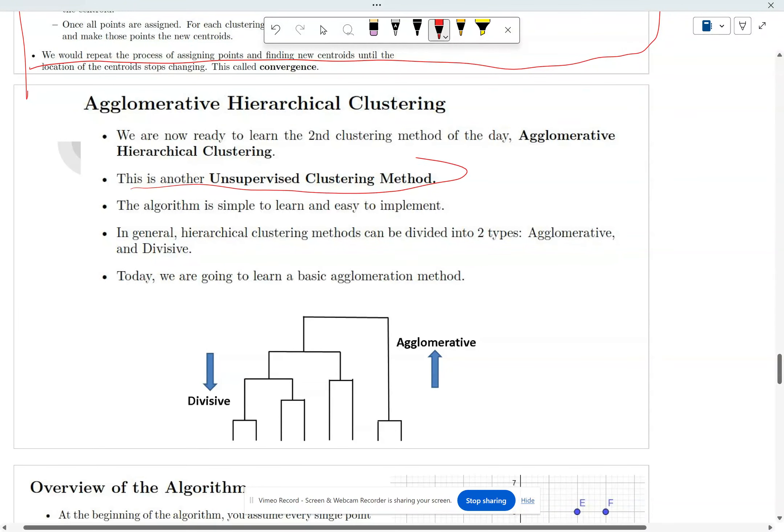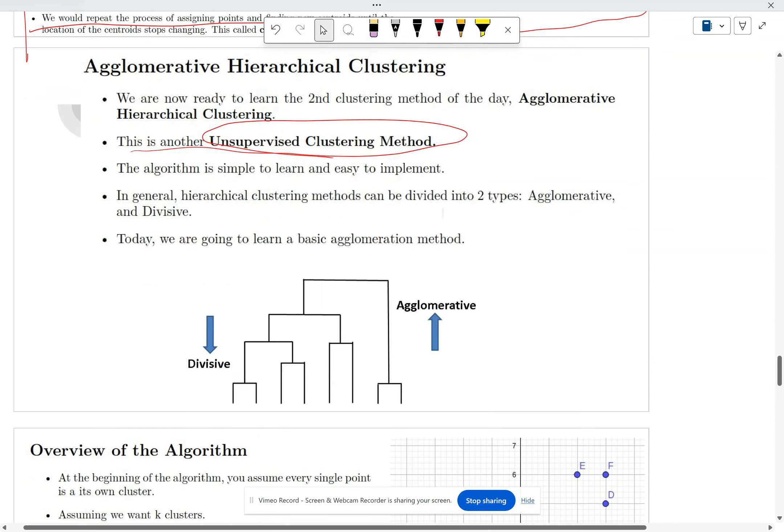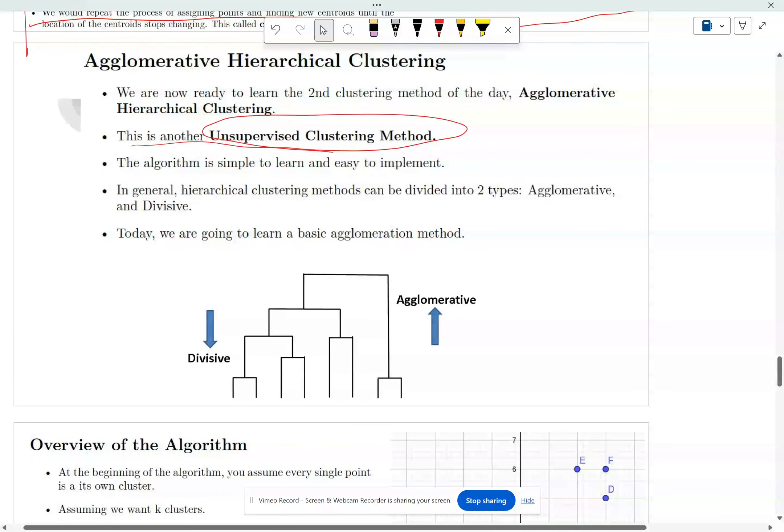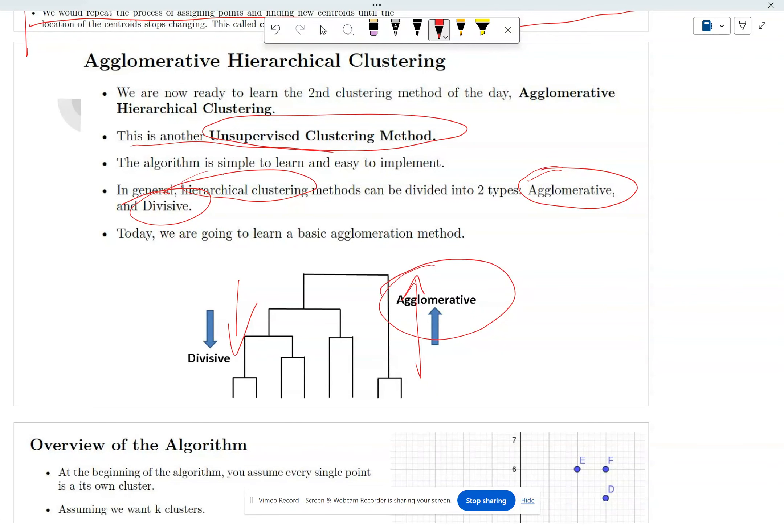This is another unsupervised clustering. The algorithm is really simple to learn and really simple to implement. In general with hierarchical clustering you can split them into agglomerative and divisive. Agglomerative essentially you build it up into the cluster. Divisive essentially you break it down into the points. Well we're going to focus on this one today.